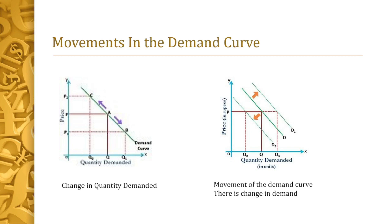Another form of movement of the demand curve is where there is a change in demand — the demand curve shifts to the left or shifts to the right, but price remains the same. Notice that in the previous example, price changed and quantity demanded changed. In this second type, price remains the same but the quantity demanded actually changes. Let's say the phone is priced at 100,000 pesos, represented by P.